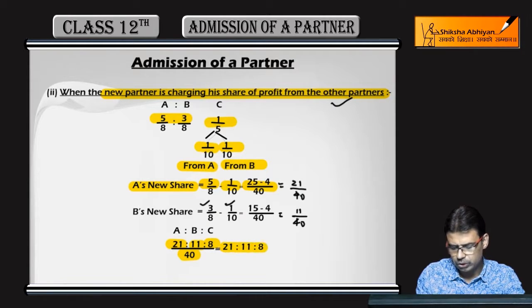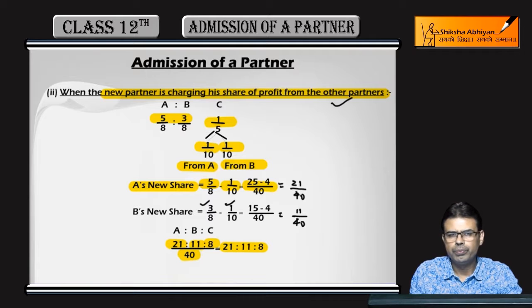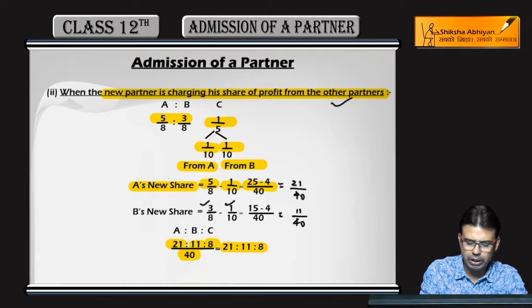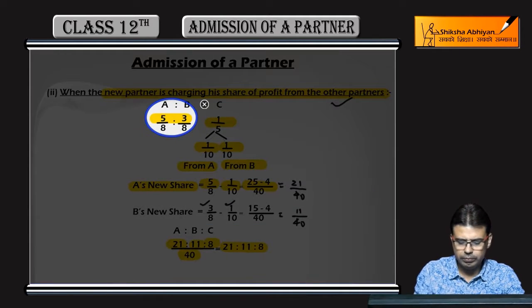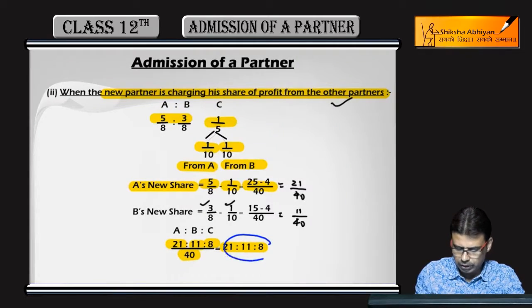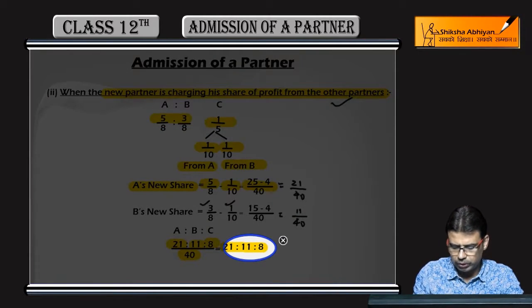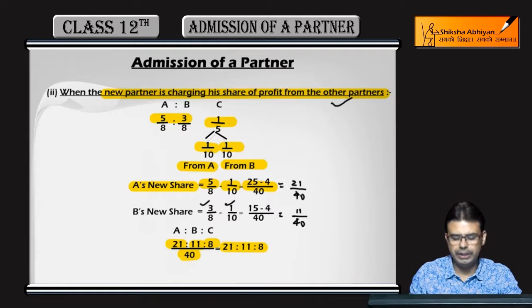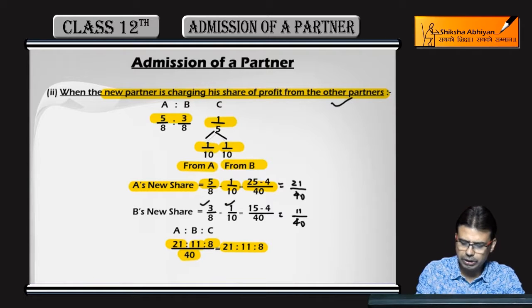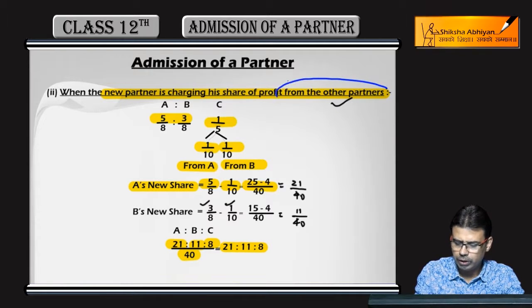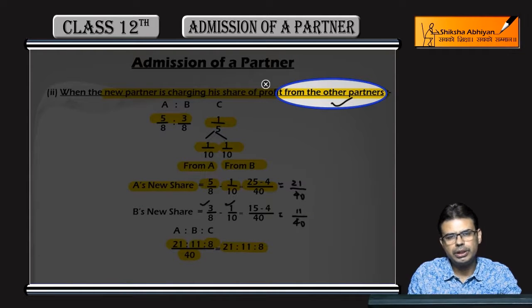So 21 is to 11 is to 8 is the new profit sharing ratio. This is the way when the new partner from other partners is charged with the share.